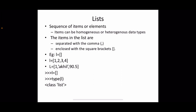Individual items are separated with commas, and the whole sequence of items is enclosed in square brackets. For example, using a variable l: empty square brackets indicate an empty list. A second example has a list with four integers — a homogeneous list. A third list contains three elements: an integer, a string, and a floating point.